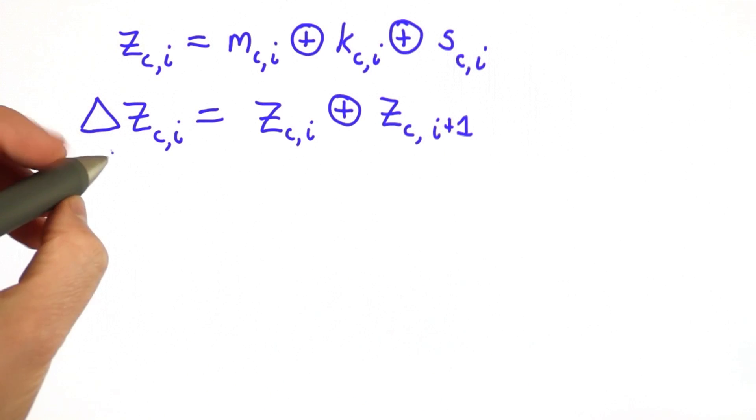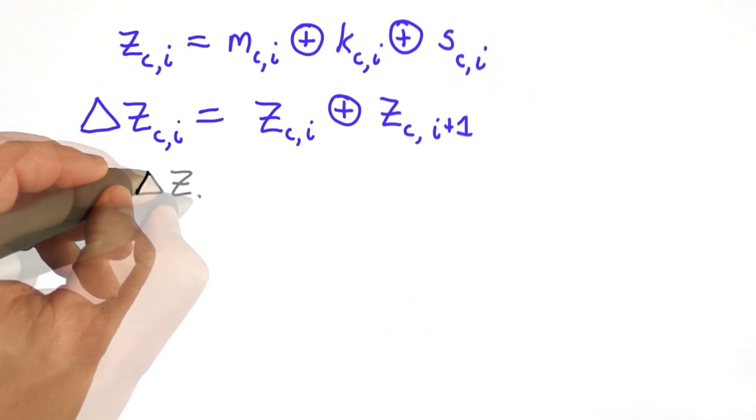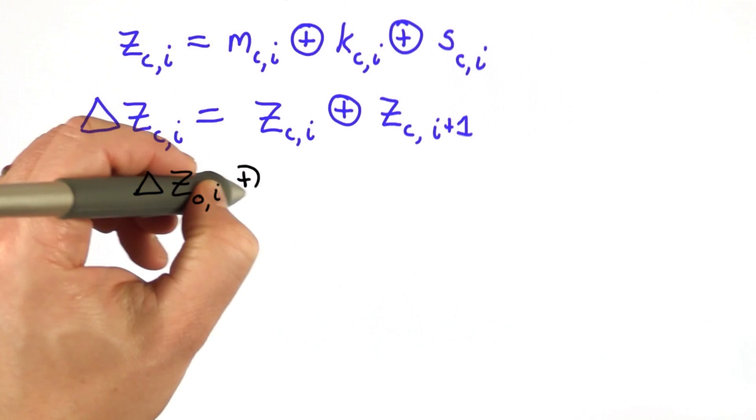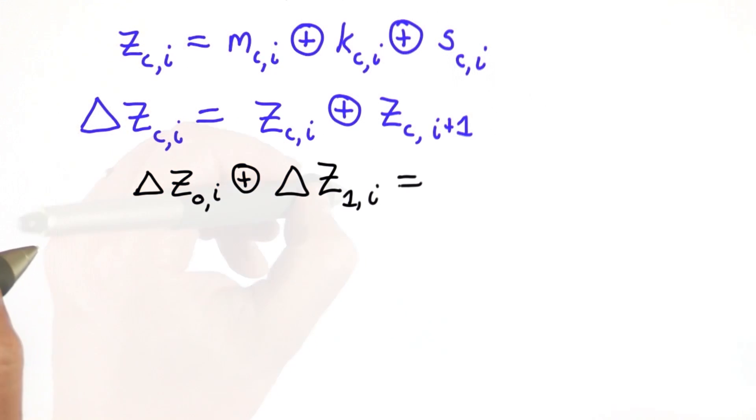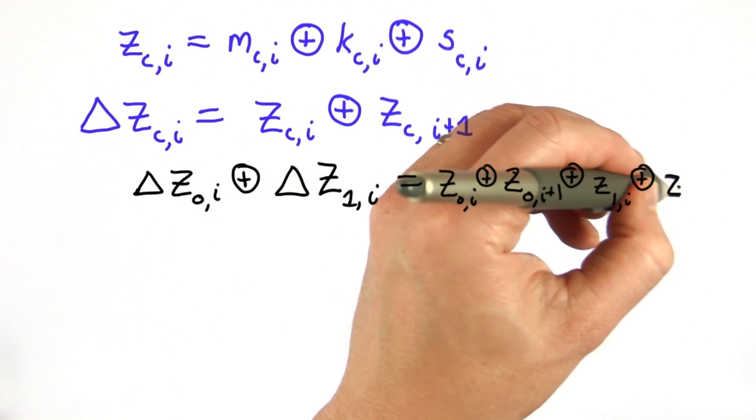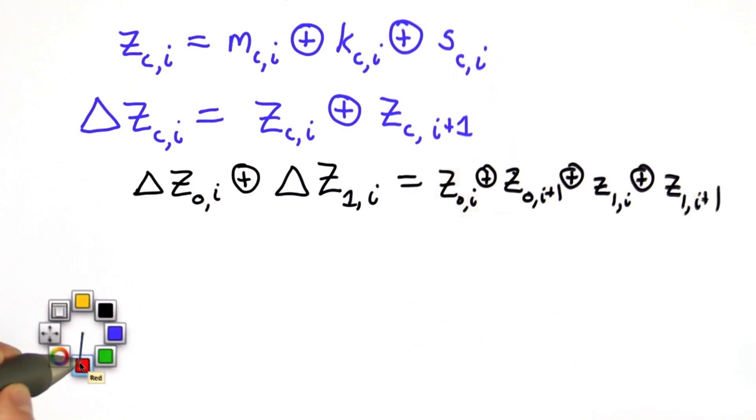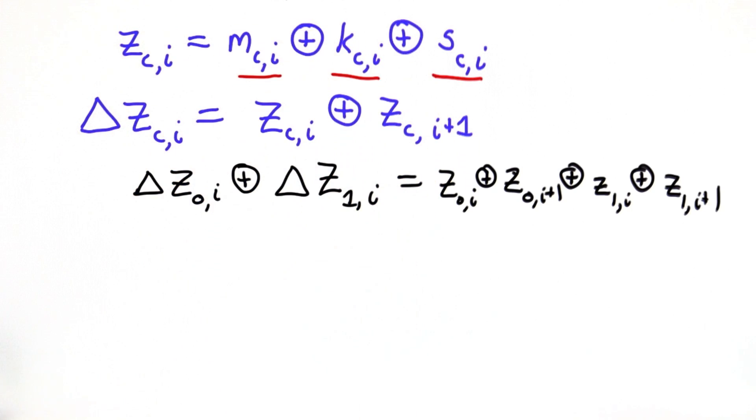What happens when we look at these values for two different channels? We're going to look at channel 0, and we're going to XOR that with the delta value for channel 1. Plugging into the definitions, that's just the result of z XORing all of these values. This becomes valuable because we can break these down into the three parts.